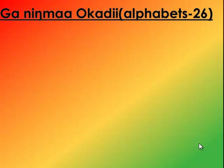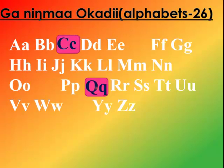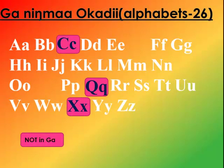GANIMA OKADI GAN alphabet. Now there are 26 letters of the GAN alphabet — that's the same as we've got in English. But within these 26 there are three letters in English that we do not use in GAN, and these three are C, Q, and X. These are the three letters of the English alphabet that we do not use in GAN, and in place of these three there are three others.